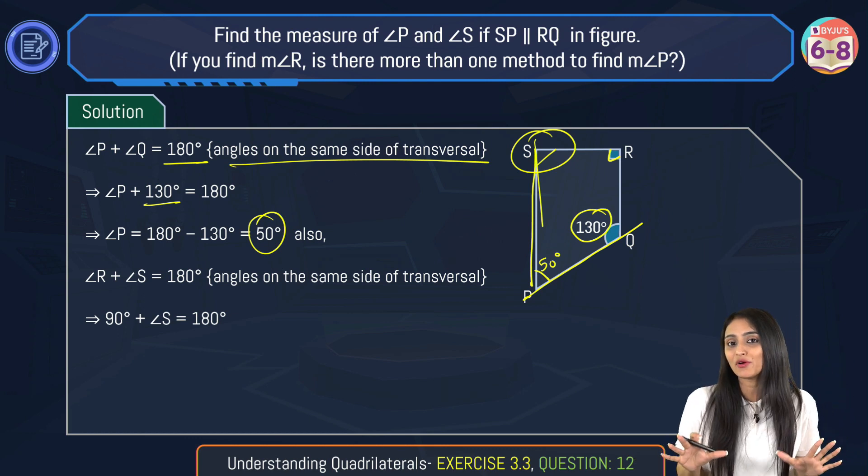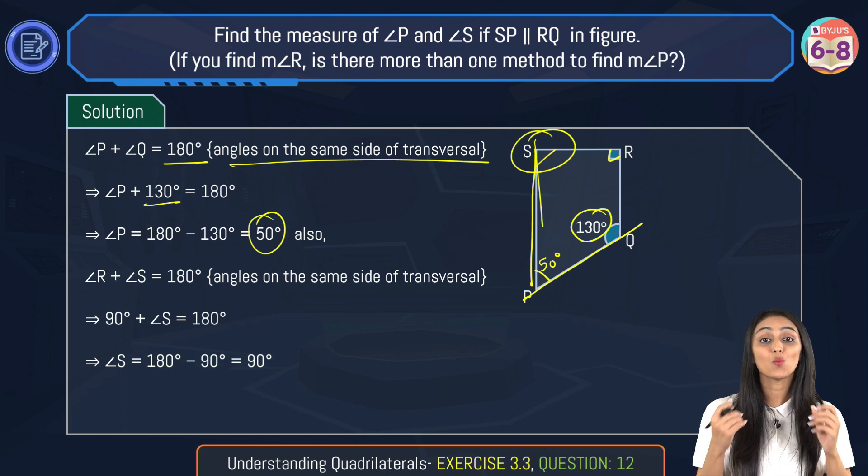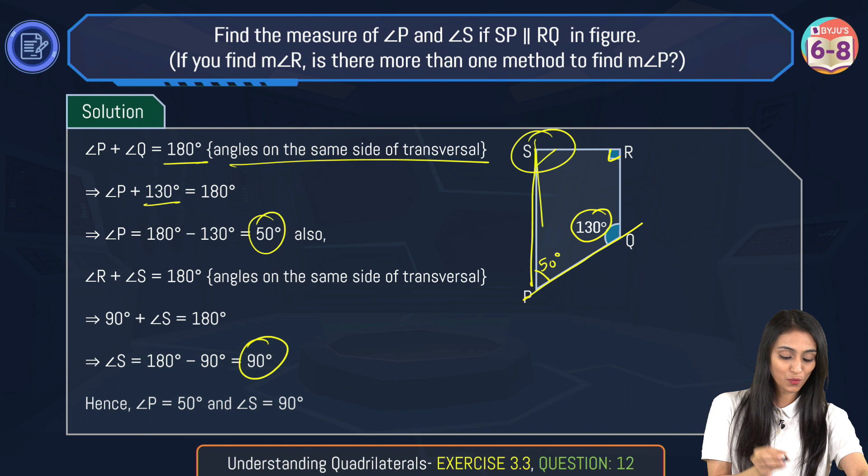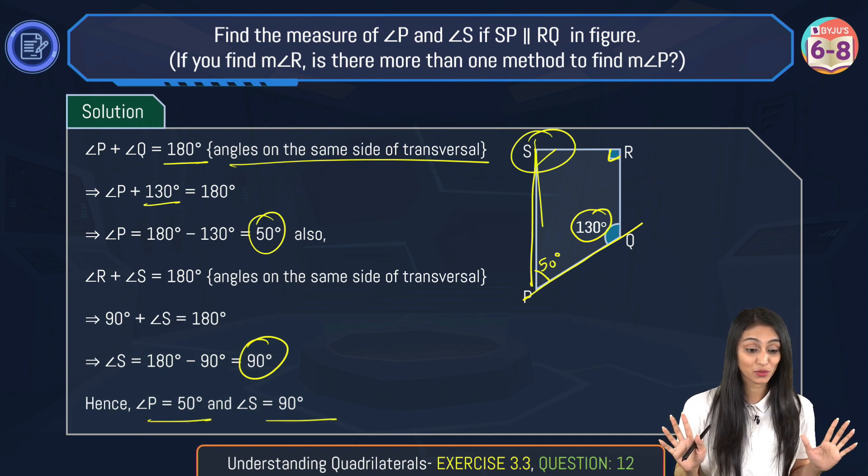It's very simple for us to find out the value of angle S from here. It's a simple equation, right? So angle S is going to be 180 degrees minus 90 degrees, that's 90 degrees. So we have got the values of both angle P as well as angle S. This is the first part of the question.